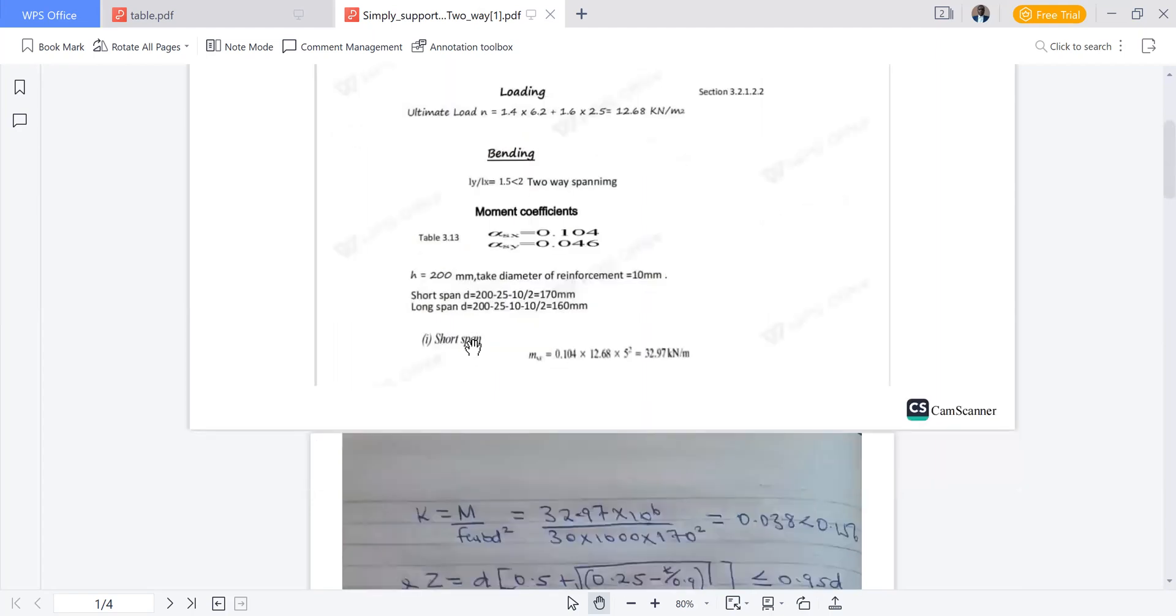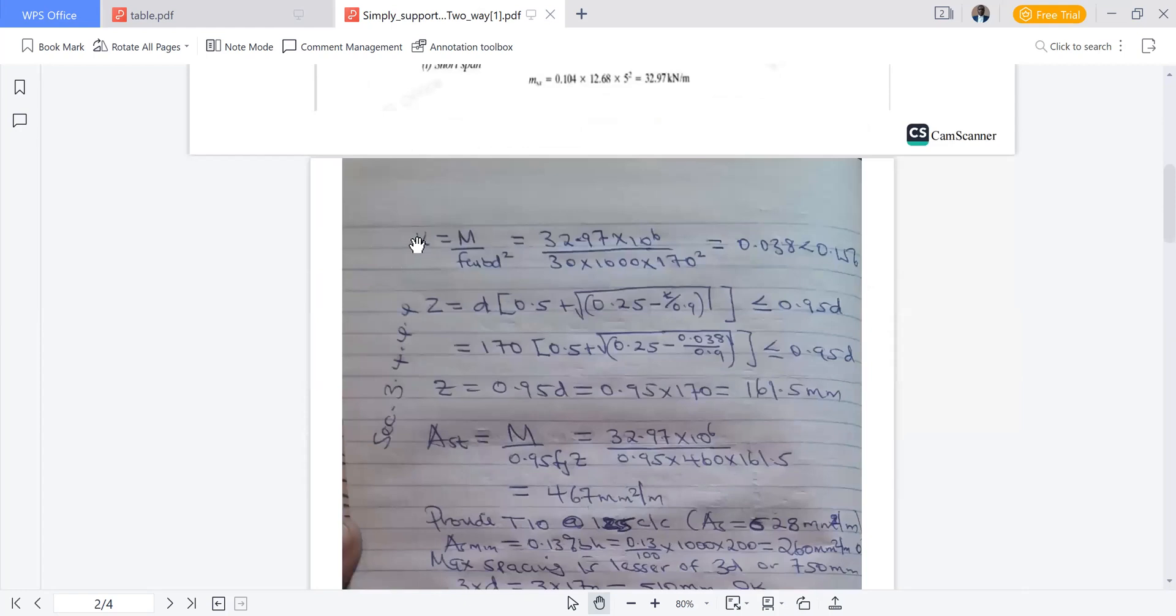Now in design, we go to short span. We'll compute the moment in the short span. Moment equals the coefficient 0.104 multiplied by n, 12.68, multiplied by lx squared, 5 meter. We get 32.97 kilonewton meter. We compute k which is m over fcu bd squared. We substitute, multiply by 10^6 to convert to newton millimeter, divide by fcu 30, b is 1000 millimeter, d in the shorter span is 170 mm. We get 0.038, which should be less than 0.156 so we don't provide compression steel.